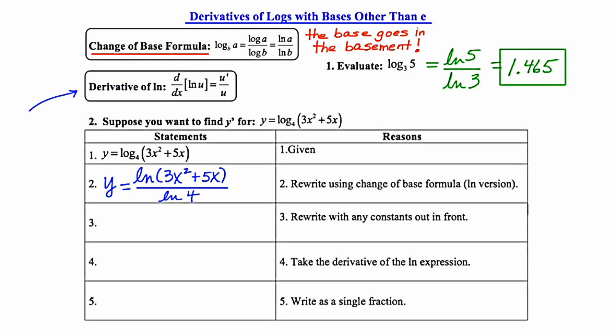In step 3, it says to rewrite the problem with any constants out in front. Now if you took your calculator and you typed in the natural log of 4, it's just a number. So that is a constant. And this particular constant happens to occur in the denominator. So I'm going to remove that and write it out in front. So I've taken the 1 over ln 4 and I've written it sort of out in front, keeping in mind that it is just a constant.